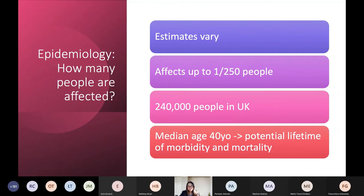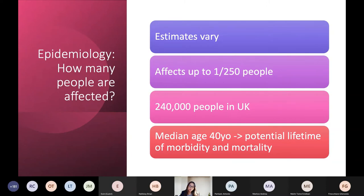Who is affected by DCM? Estimates vary — the most generous description suggests it can affect up to one in 250 people, which is just under a quarter of a million people in the UK. The median age of onset is about 40, so that's a huge population with a potential lifetime of morbidity and mortality. Some older studies suggest one in 2,500, so there's huge variation. In practice, between one in 500 and one in 250 is most likely a reasonable number.